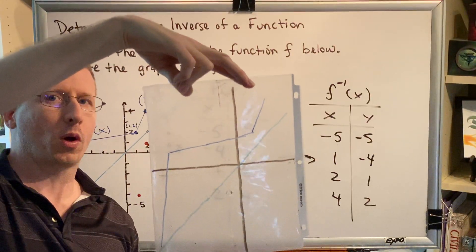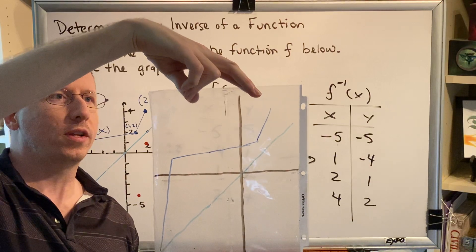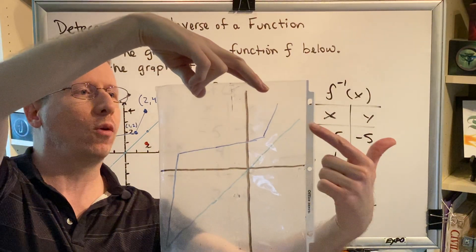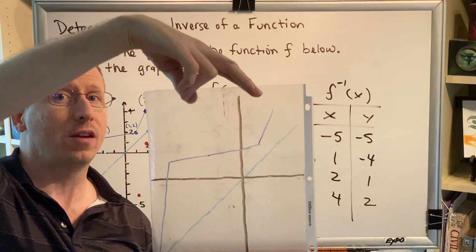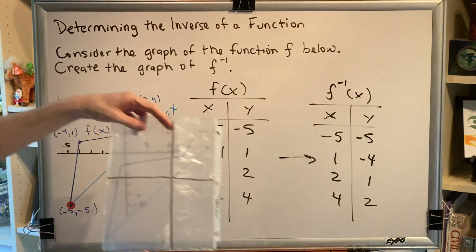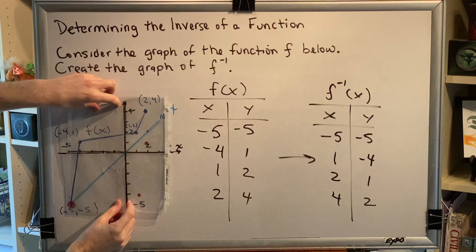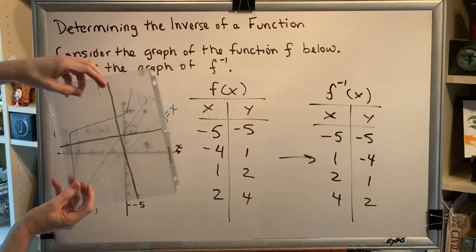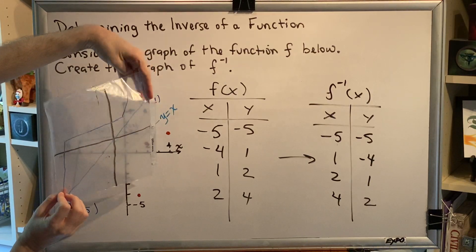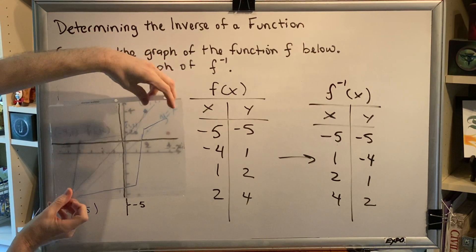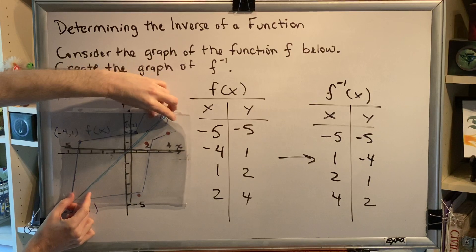What we're going to do is we're going to take this and we're going to spin it around the line y equals x to get a sense of what f inverse must look like. All right, so here we go. Here is our graph. I'm going to pick it up and I'm going to spin it around the line y equals x and then put it back on top of our diagram.